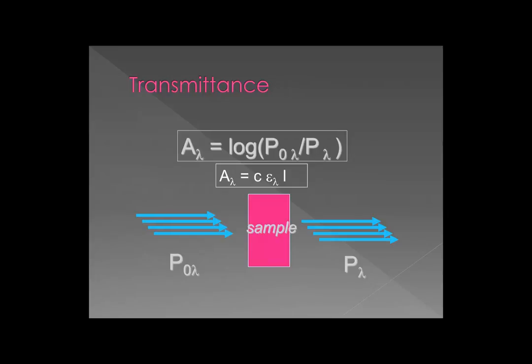Since my analyte is only going to absorb light in a specific wavelength range, I'm going to need some way to send different wavelengths through my sample at different times, or find a method of differentiating the wavelengths of light. With this information I've created a visual picture from which we can create a roadmap for the design of our spectrometer.